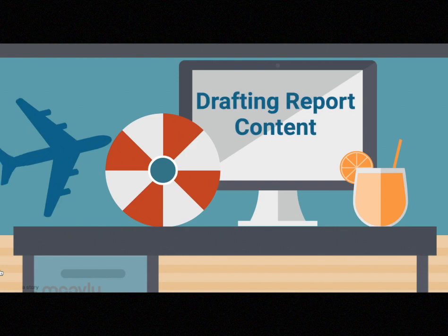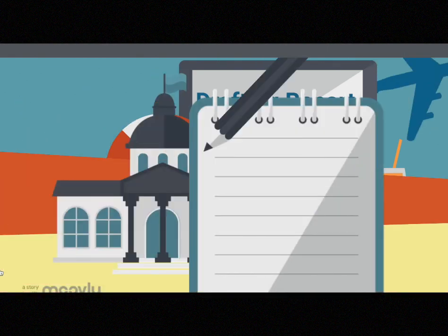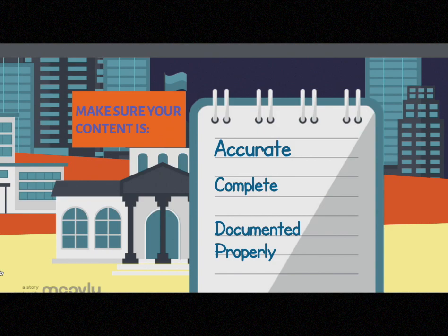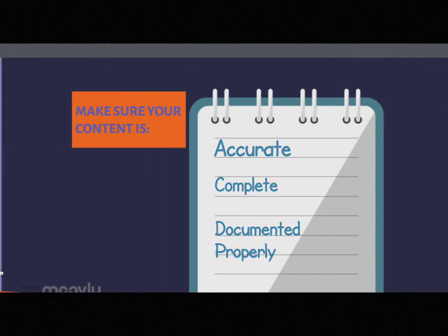Drafting report content. When drafting report content, you want to first make sure that your content is accurate, complete, and documented properly. Proofread for typos in your writing. Double-check your facts and references. Tell your readers only what they need to know — nothing more, nothing less. Review your report to ensure that all sources are cited and it is properly documented.